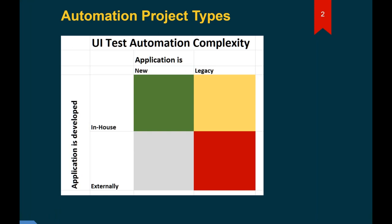Today I'm going to talk about web UI test automation and the technical difficulties that appear in real-life testing scenarios. When you do UI testing, especially UI test automation, you notice that projects vary by complexity. The best variant is when the application is developed in-house and testing efforts are performed in parallel with development, giving the QA team access to developers who are ready to make the application more test-friendly.